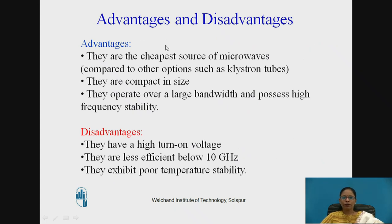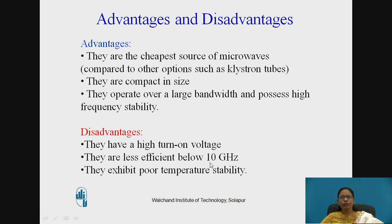Gunn Diode advantages: these are the cheapest source of microwaves compared to klystron tubes. They are compact in size, operate over a large bandwidth, and possess high frequency stability. Disadvantages: they have a high turn-on voltage, they are less efficient below 10 GHz, and they exhibit poor temperature stability.